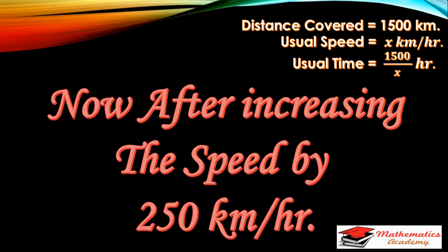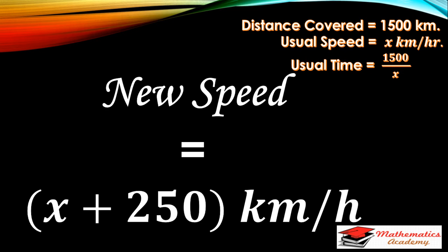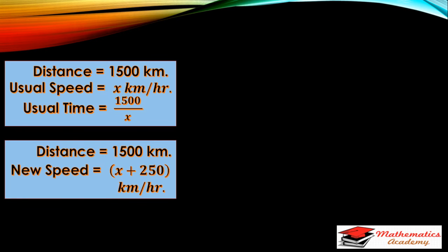After increasing the speed by 250 km per hour, because the plane has to reach the destination on time, the airplane increases its speed. The usual speed is X, therefore the new speed becomes X plus 250, since the speed is increased by 250 km per hour from the usual speed.